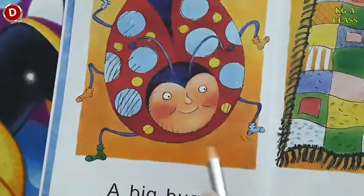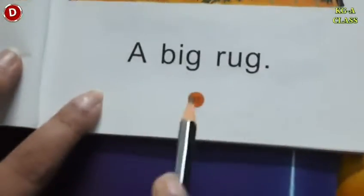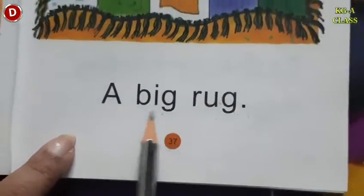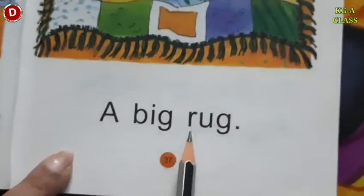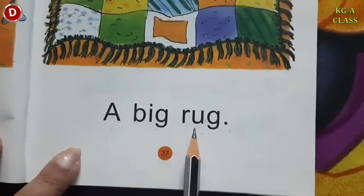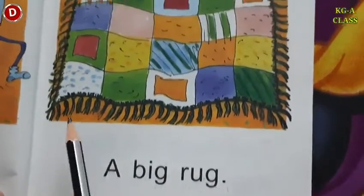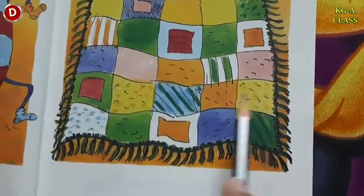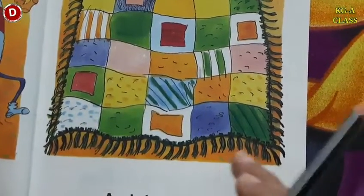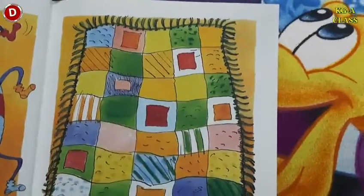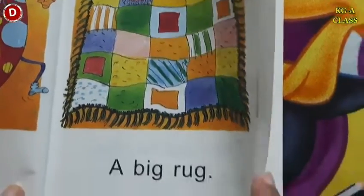A big bug. Children, this is a rug. Rug means dary. This is not a small rug, it is a big rug. A big rug. In this way, you have to read.